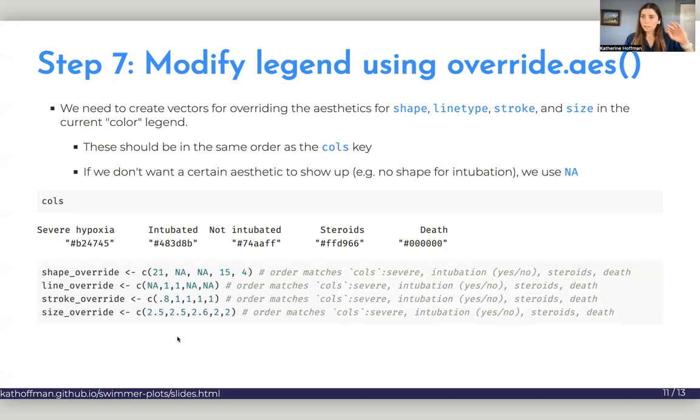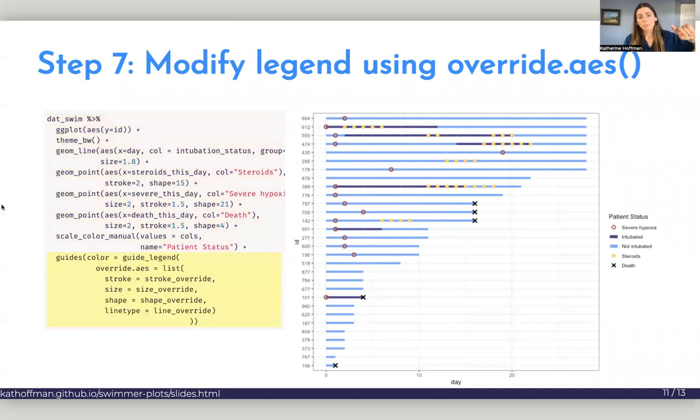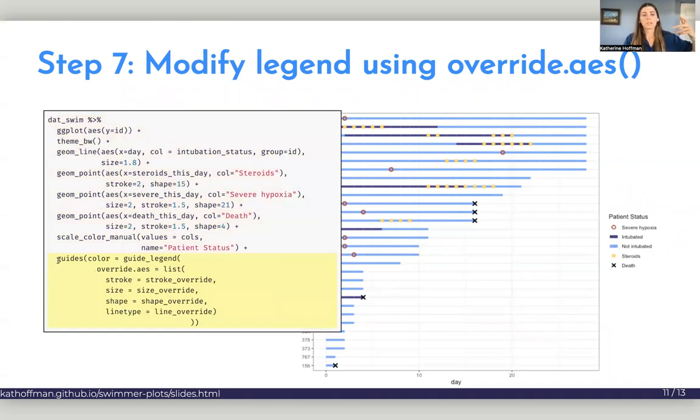So now we'll take these four vectors, these override vectors, and this is the same plot as before. I'm just going to add this sort of block of code for the guides layer of ggplot. And we'll say, this basically just says, take the color guides, the color legend, and override the aesthetic with this list that I've given you. So my list is, hey, for stroke, I want you to override the legend and use my stroke override arguments, parameters, column. And for size, same thing, shape, line type.